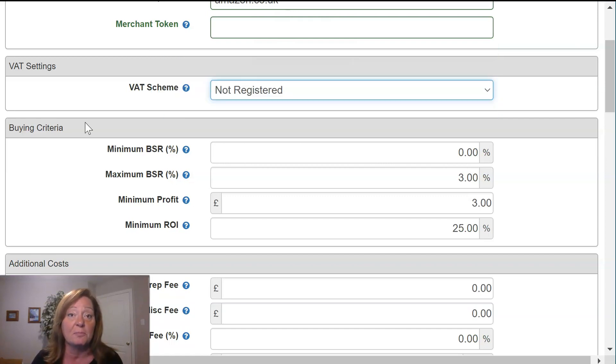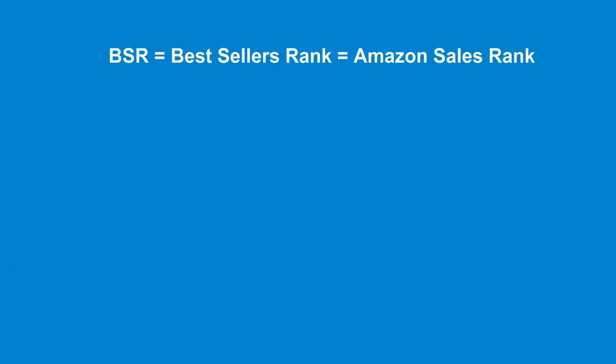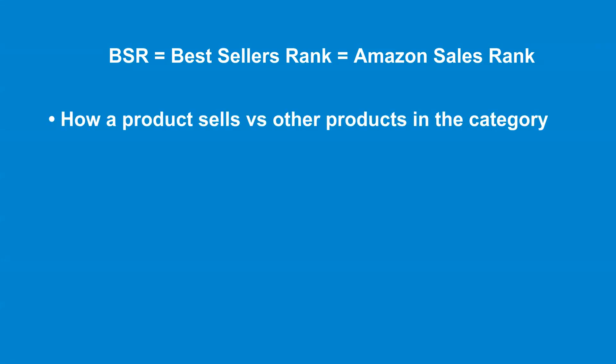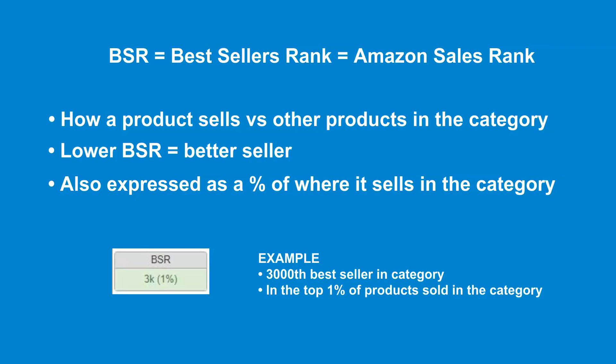First, let's take a look at BSR — both minimum and maximum BSR. Best sellers rank, also known as Amazon sales rank, tells you how a product sells in relation to other products in the category. The lower the rank, the better it sells. But not all categories are created equal, so SAS shows you the rank as a percentile within that category. For example, a product that has a BSR percentage of 1% is a good seller — it sells better than 99% of the products in the category.